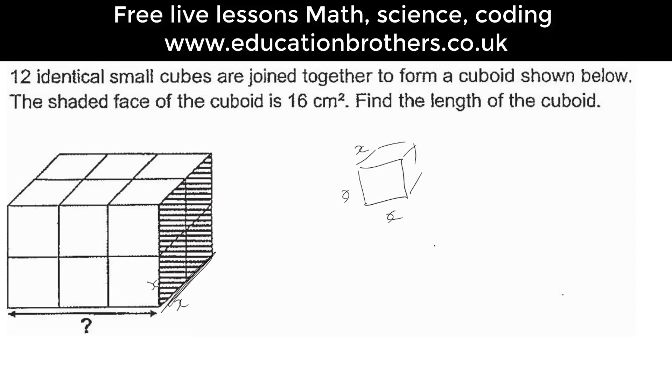For example, this one is two lots of x's, so it's 2x. And the face going up is x and x, so you've got 2x and 2x going up.